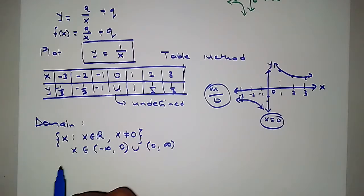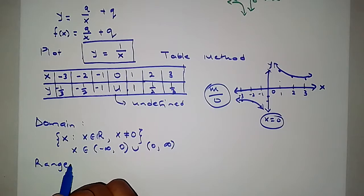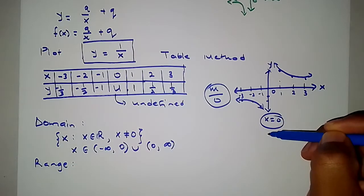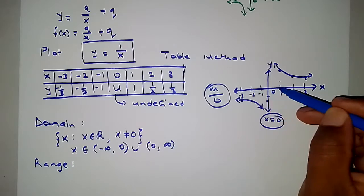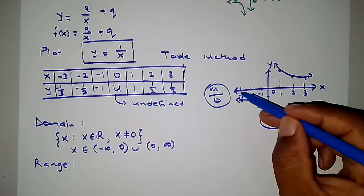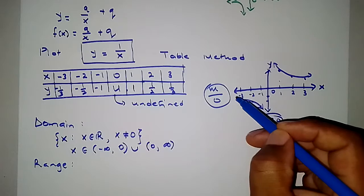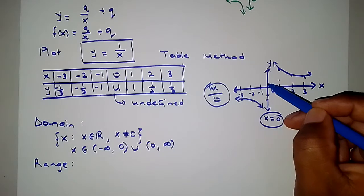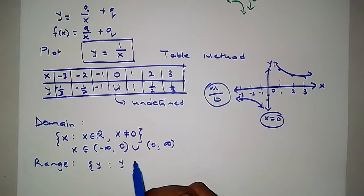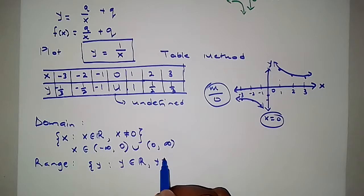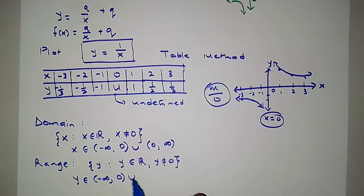That is how we look at the hyperbolic function. For the range, looking from negative infinity upward, the function is defined. But at y = 0, the function is not defined — the graph gets closer and closer to the line but never touches it. So the range is: y is an element of real numbers but y cannot equal 0.